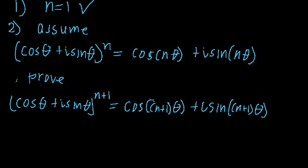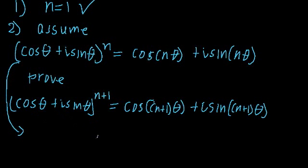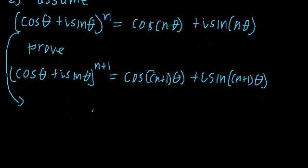Now in order to do this, here's what we're going to do. We're going to take this expression — what we're assuming to be true — and we're going to multiply the left and the right hand side by cosine theta plus i sine theta.